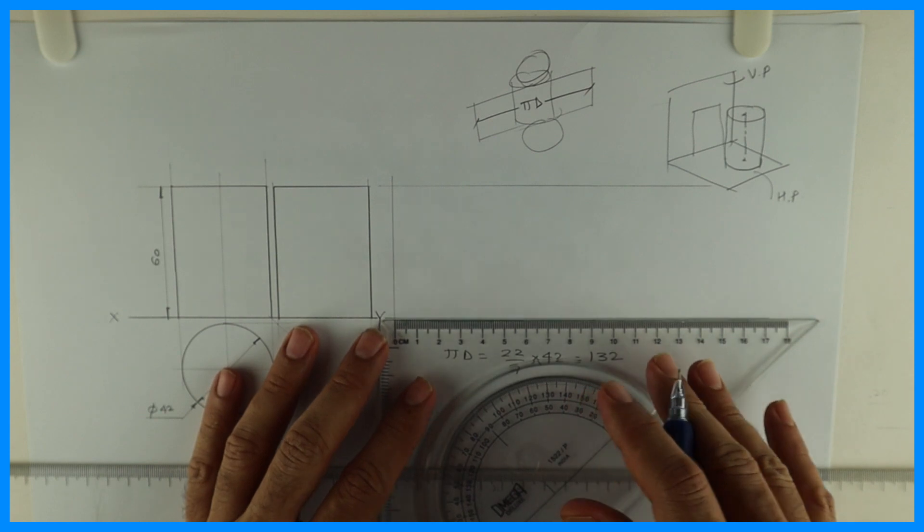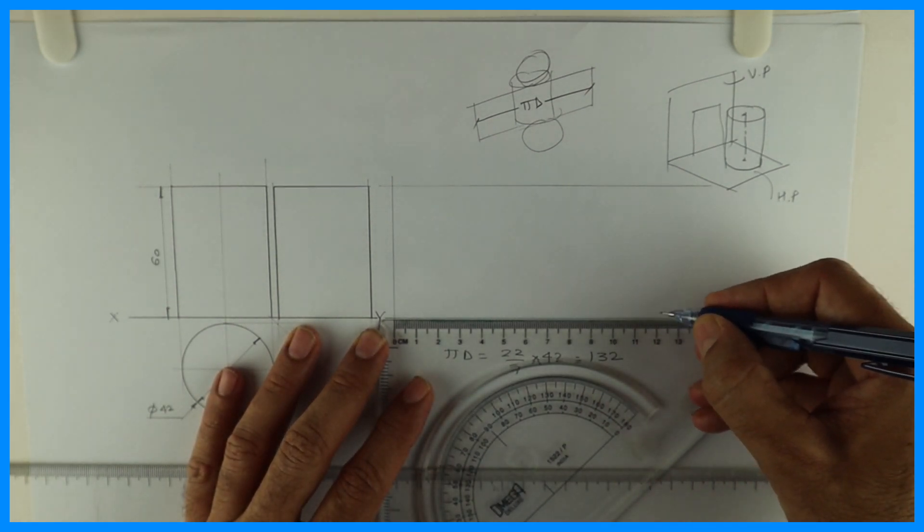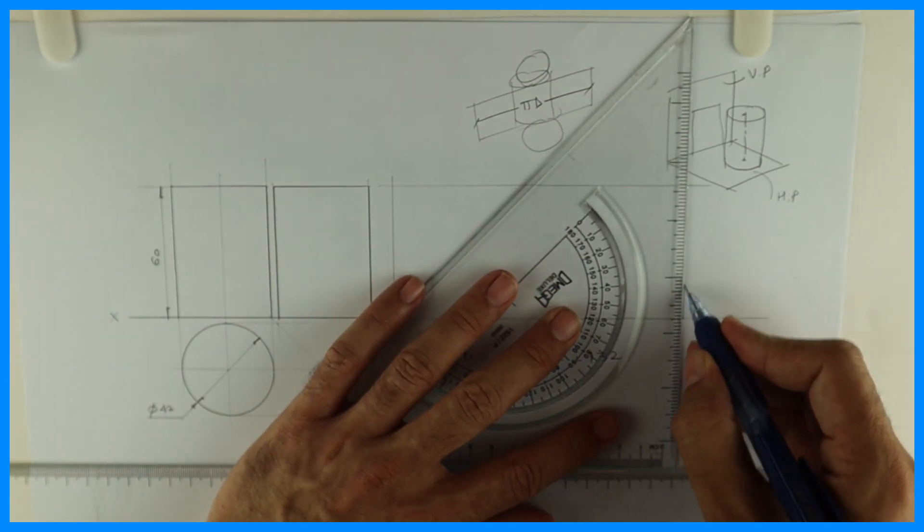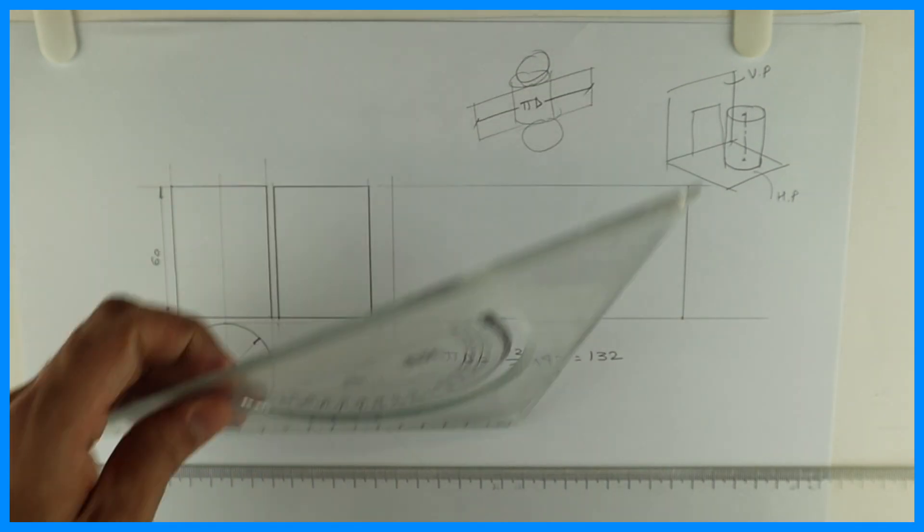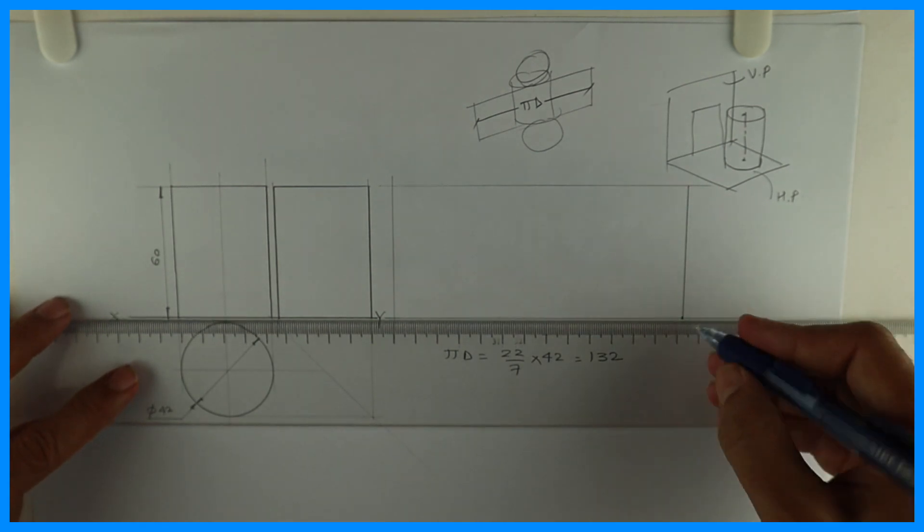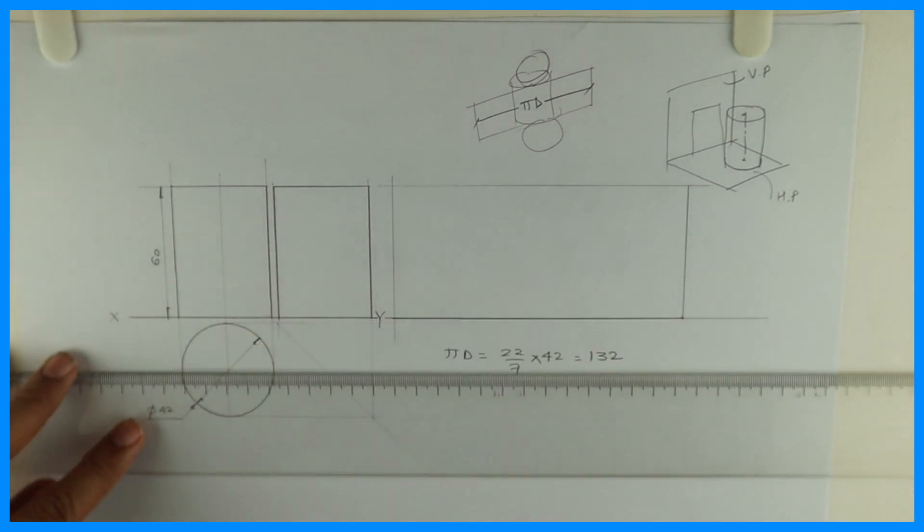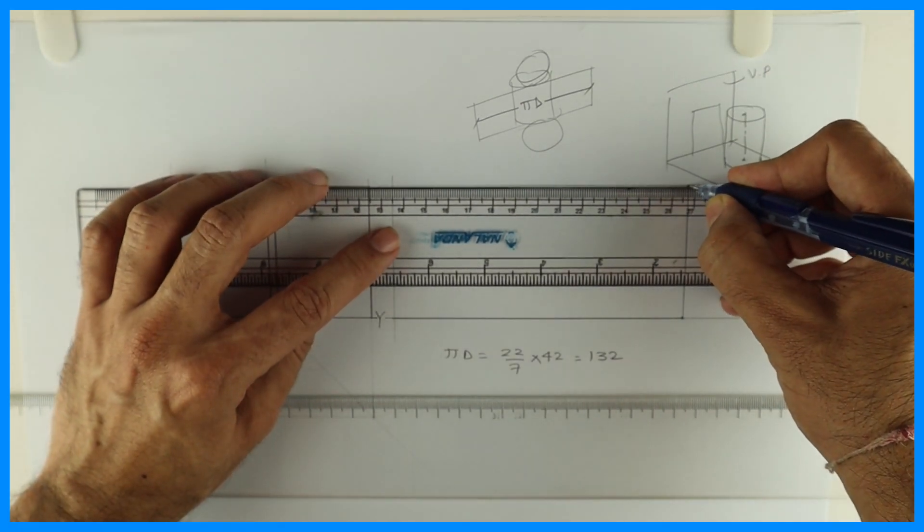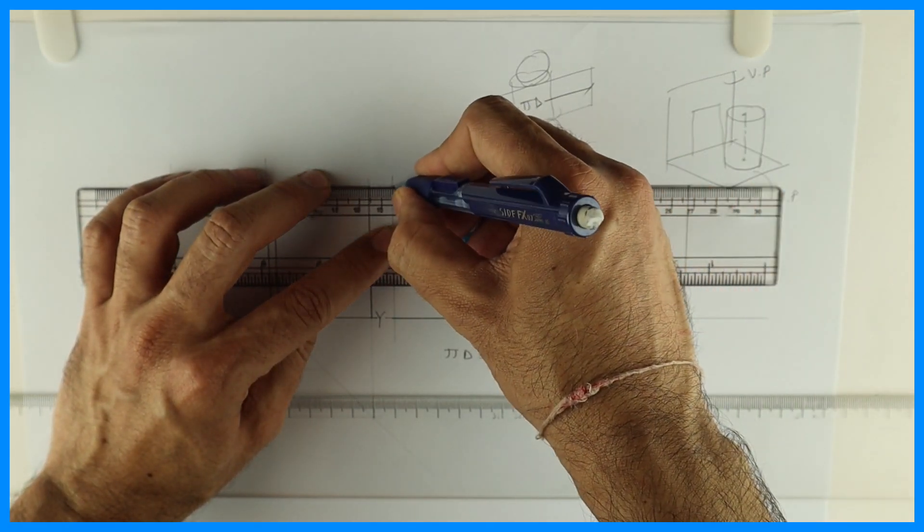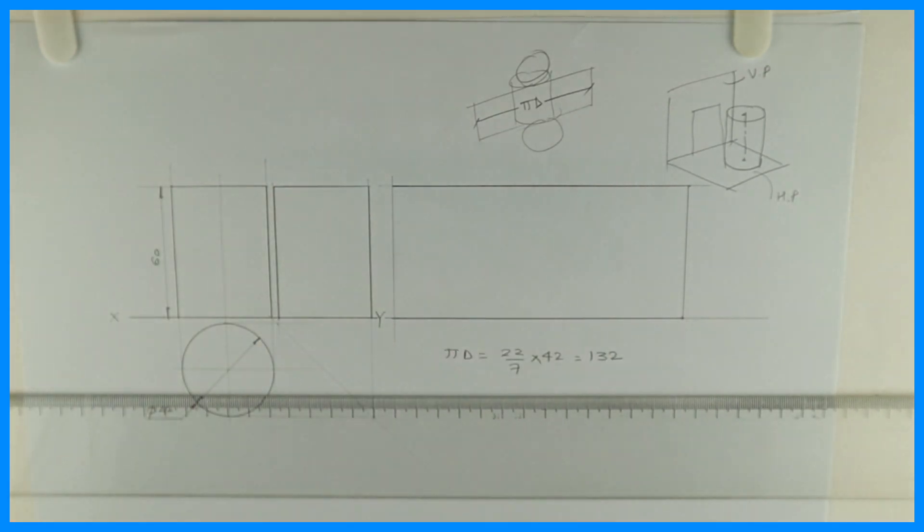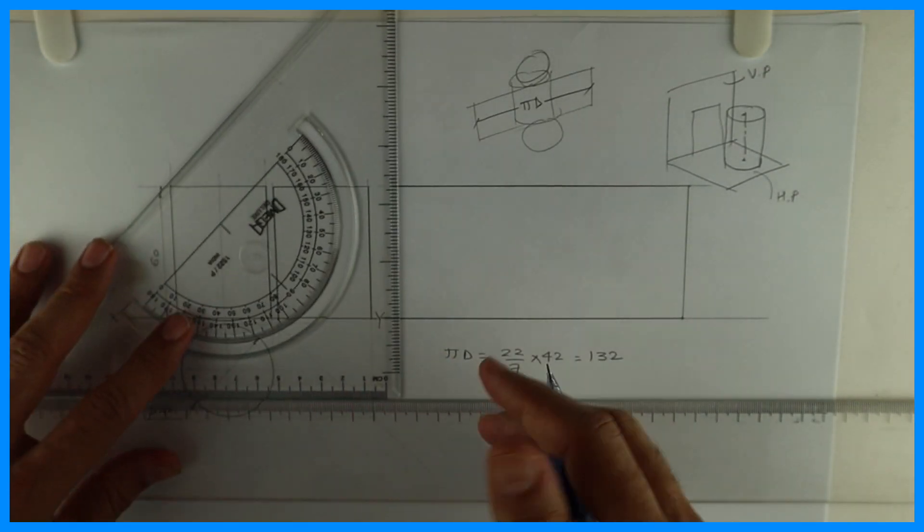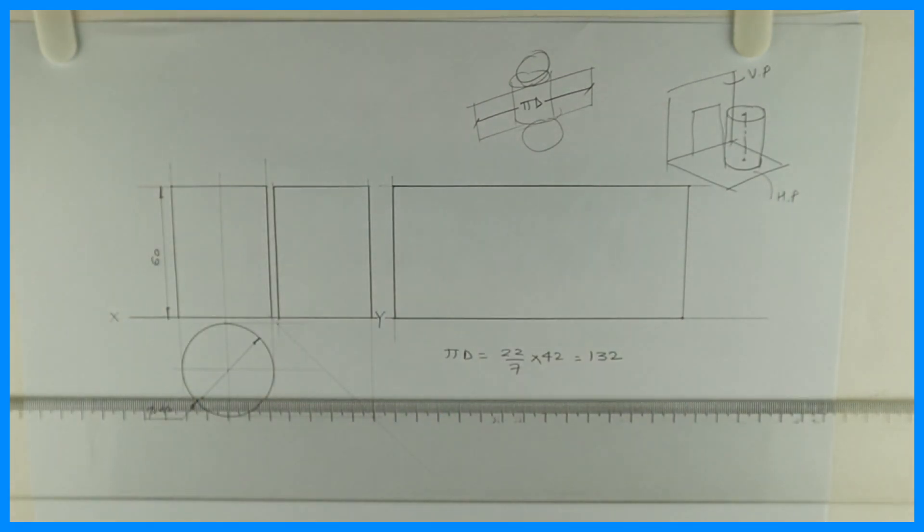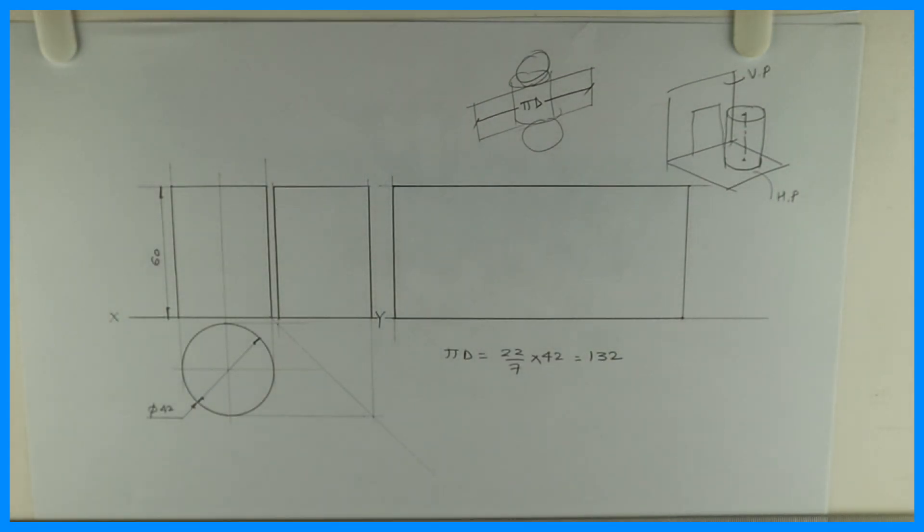So this will be 132. So pi d equals to 132mm. So you'll take 132mm. You'll extend this line. So this is what you get is lateral surface development. This is what we have in ICSC portion.